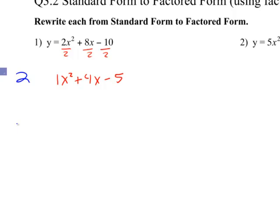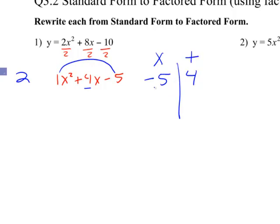The method I'm going to show you today is called the rainbow method. It's called the rainbow method because we draw a little rainbow over the top and use that to determine our factors. We multiply 1 times negative 5, which gives me negative 5. Then I take my b value of 4 and write it next to it. I want two numbers that multiply to be negative 5 and add to be 4.